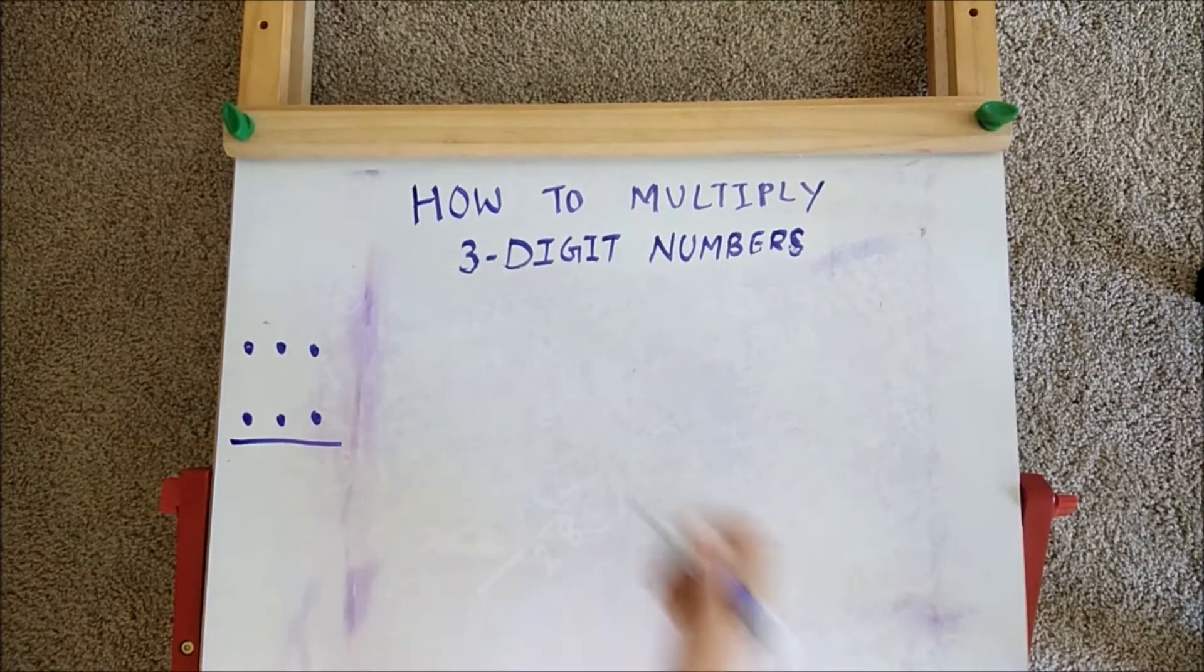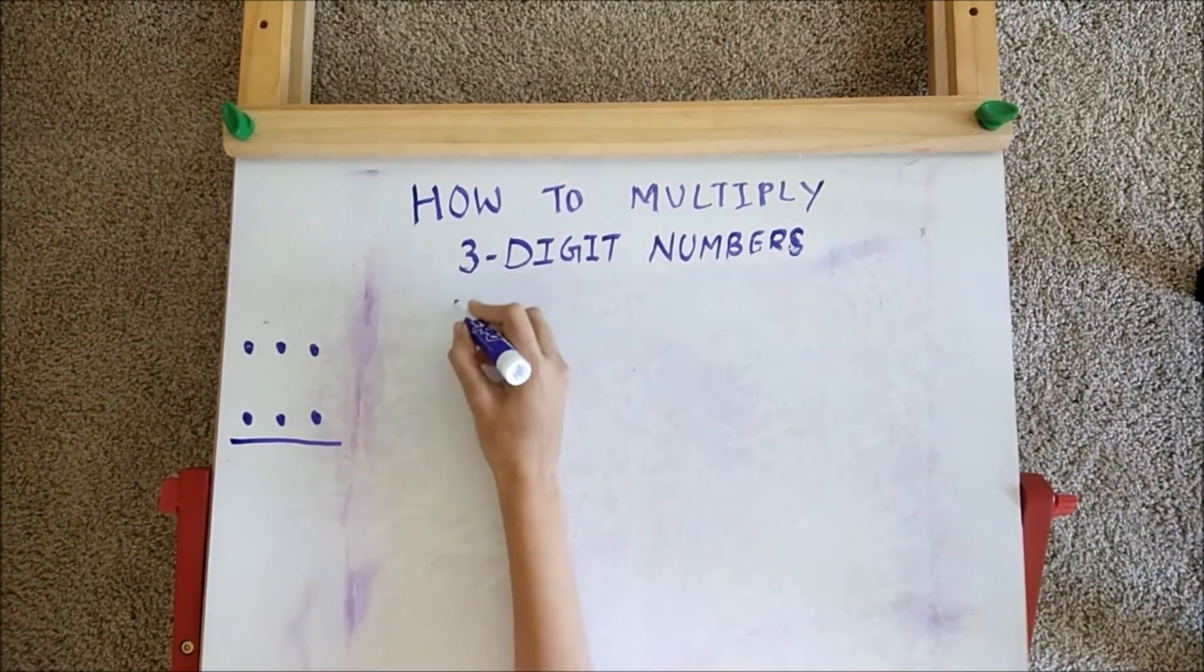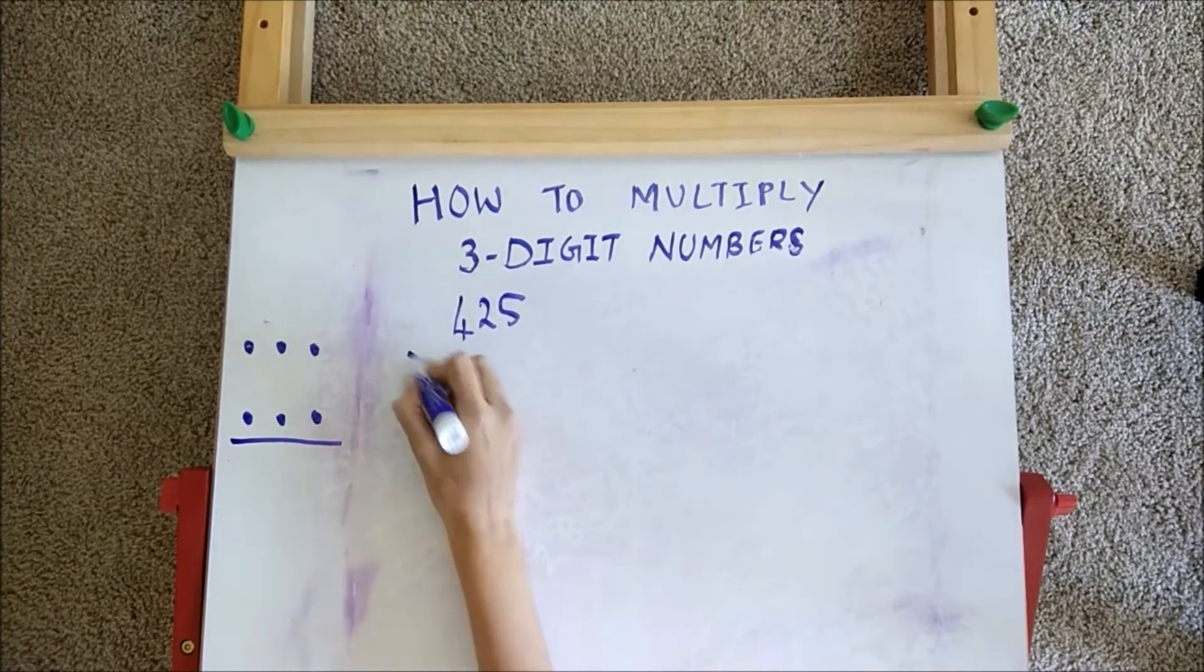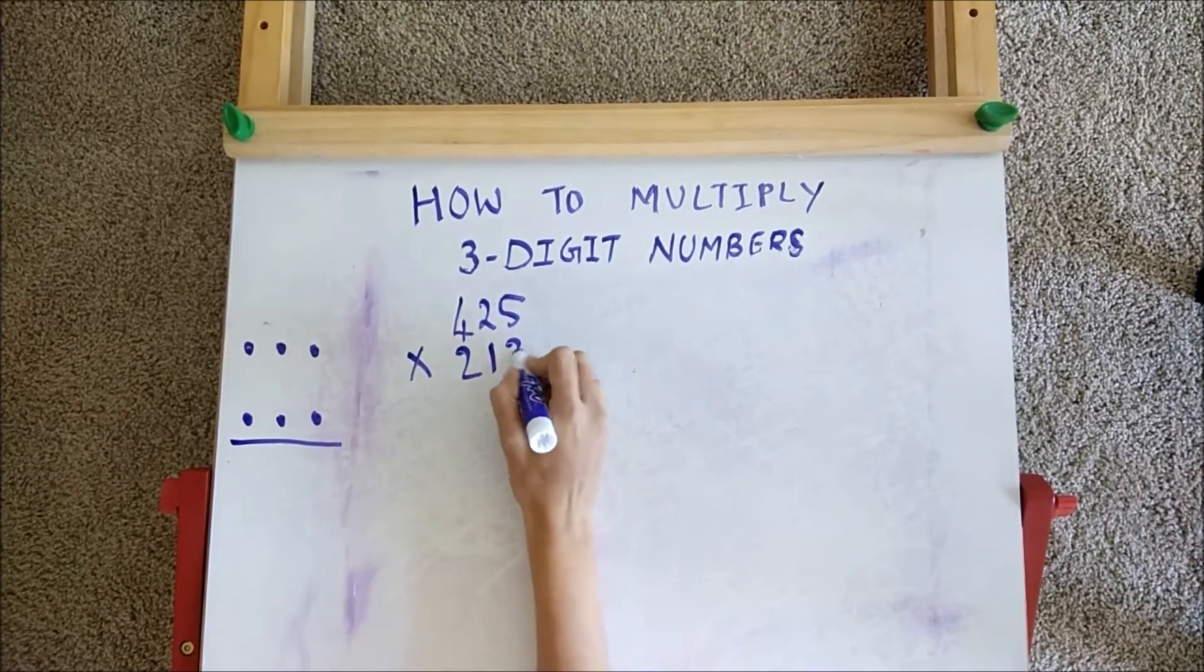Now let us take an example to understand it better. For example, 425 into 213.